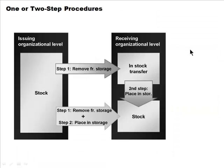When doing stock transfers, you can choose a one-step or a two-step transaction. In a one-step transaction, removal and placement in storage are entered as one single transaction, creating one material document with two items — one representing removal from the origin and the other representing deposit into the destination. In a two-step stock transfer, the removal is entered as one transaction and the subsequent deposit as another, creating two separate material documents.